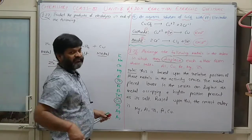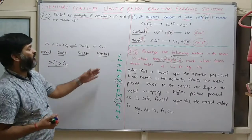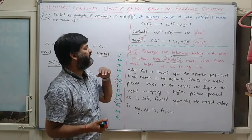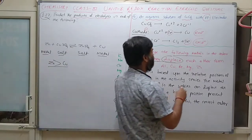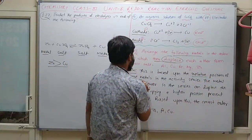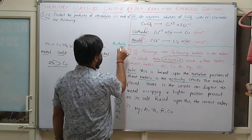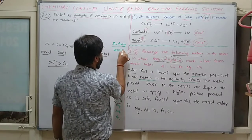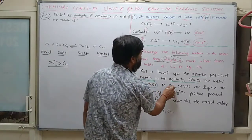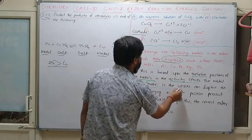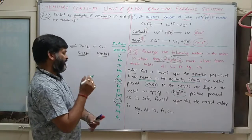This is based on the activity series of metals, which has 13 elements. The metal lower in the series can displace the metal occupying a higher position, present as its salt. So this is the activity series.